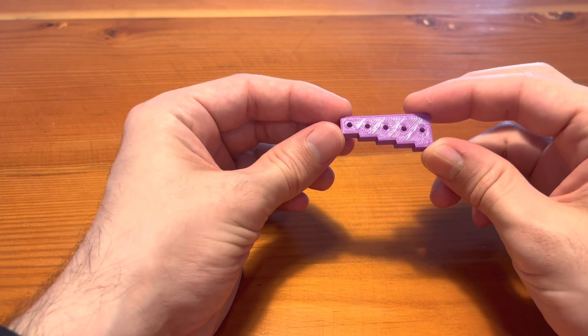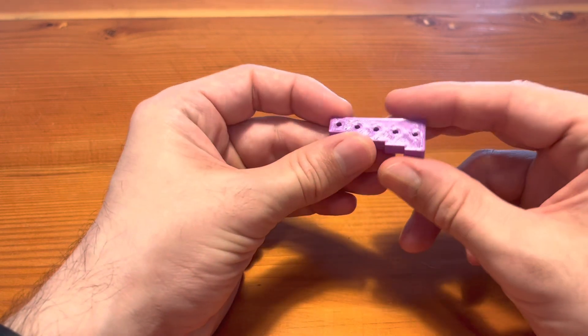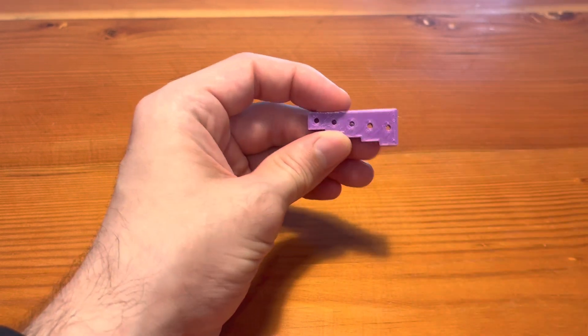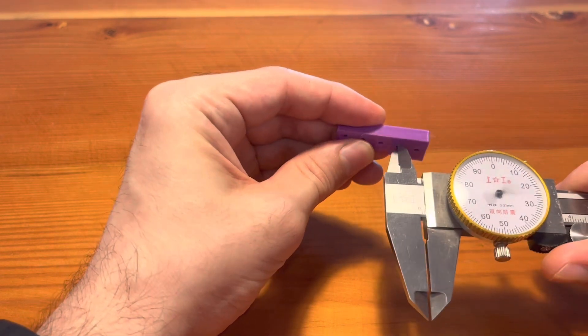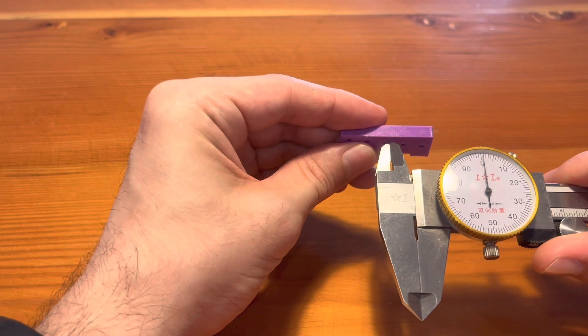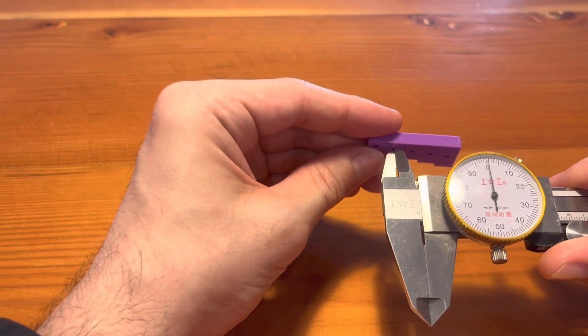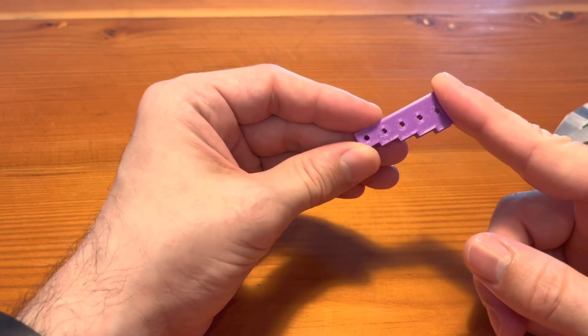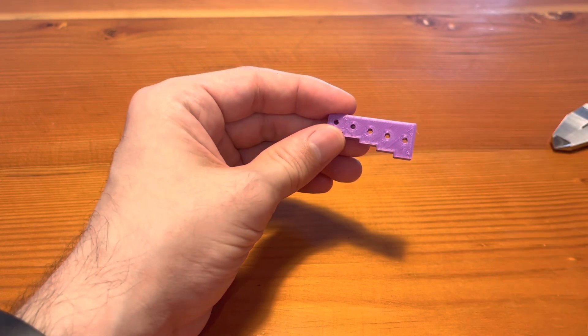Now we've got our first test part printed out here. This is the 2.7 millimeter version. Before we get started with the testing, we need to verify these hole sizes. These holes were 2.7 millimeters in the model. If we measure it here, holy smokes, getting about 2.4 millimeters. So that is quite a bit smaller. We definitely cannot start this screw testing if we don't have the right hole size. So let's go take a look at some settings in Cura and see if we can adjust this.